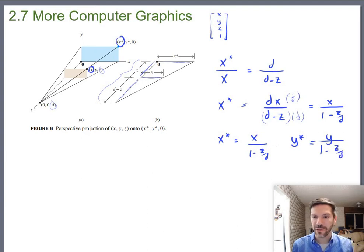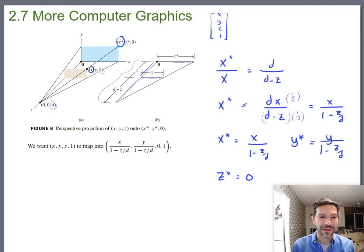There's our new x-coordinate, our new y-coordinate. We know our new z-coordinate is 0. So that gives us enough that we can set up the mapping that we want. We want to map our original point x, y, z, 1 onto the new x, new y, 0 for z, and 1 for the homogeneous coordinate.